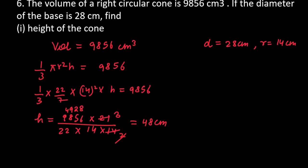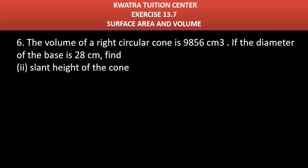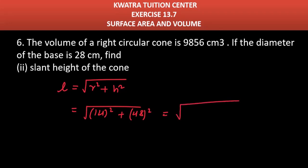Now moving to the next part. In this case you have to find the slant height. Slant height is l = √(r² + h²). r is 14, h is 48. 14² is 196, 48² is 2304. Add both to get 2500, and root of 2500 is 50. So you get slant height as 50 centimeter.